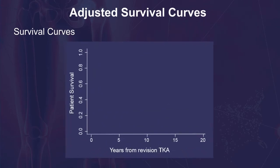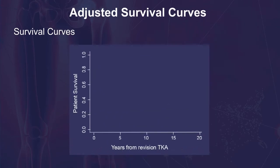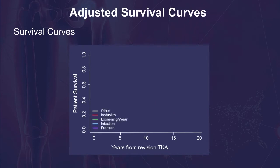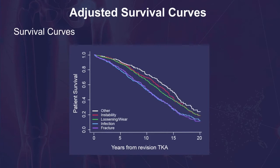Kaplan-Meier survival curves are the most common method for unadjusted group comparisons in orthopedics research. However, these curves may be misleading in observational settings due to an imbalance of confounders between the comparison groups. A Cox proportional hazards model is frequently used to adjust for confounders, but graphical displays of adjusted survival curves are not commonly utilized.